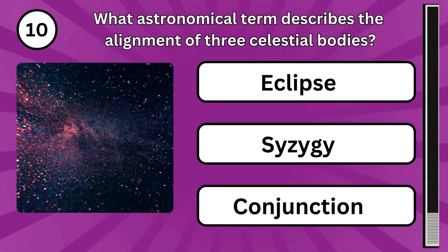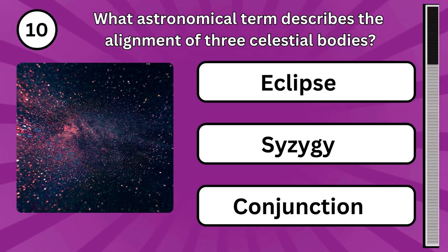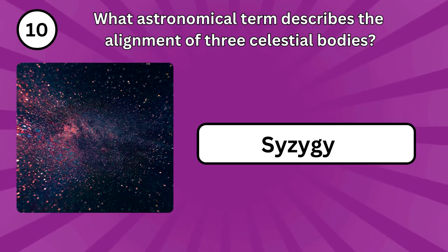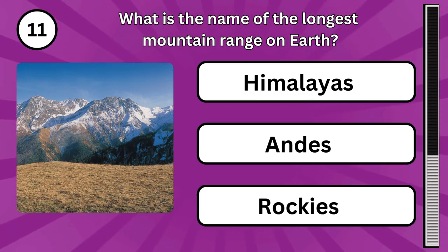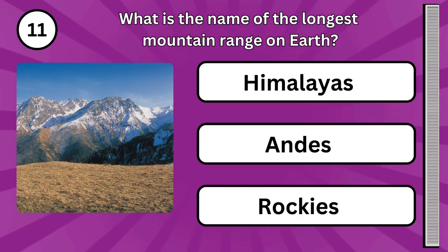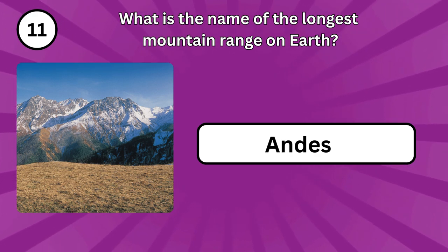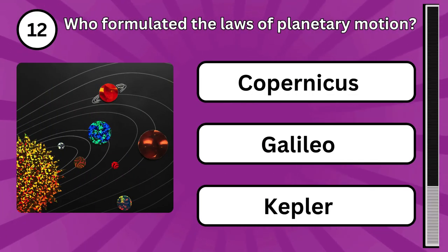What astronomical term describes the alignment of three celestial bodies? What is the name of the longest mountain range on Earth? Who formulated the laws of planetary motion?